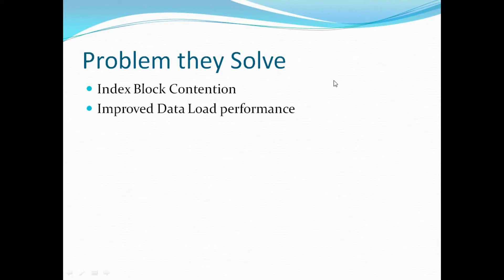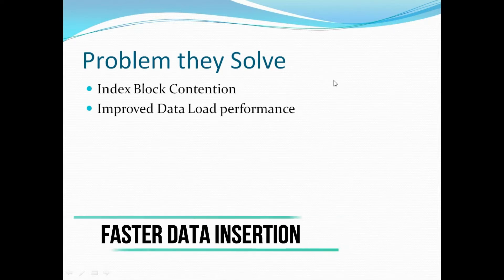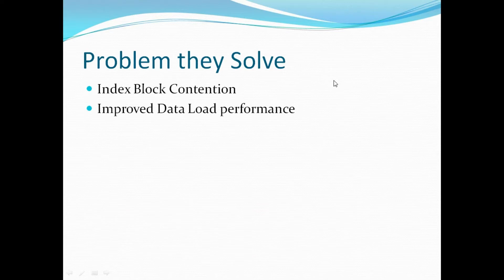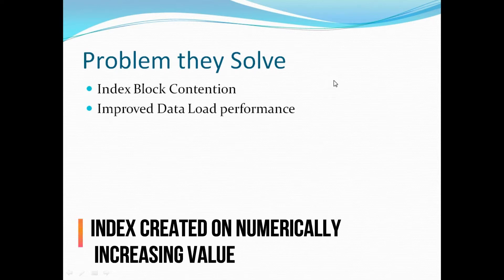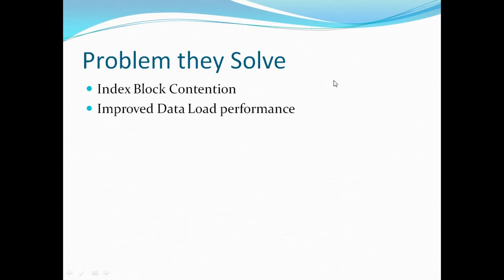The basic idea behind the reverse B-tree index is to improve the performance of DML operations. We all know that an index can significantly improve performance in the case of select queries, but there is a cost associated with an index. Every time we perform an insert, update, or delete operation on the table, Oracle has to update the index as well. It has to maintain that index, and that index maintenance can get really acute in certain scenarios.